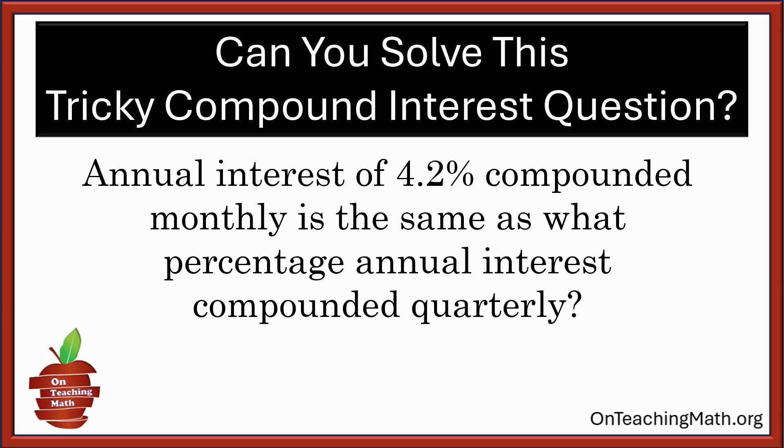Hello, everybody. Welcome. My name's Philip Brown. I've got a cool little problem right here. It's on compound interest, but it's not your straight old run-of-the-mill normal one. It says an annual interest rate of 4.2% compounded monthly is the same as what percentage annual interest compounded quarterly? Give it a shot. Put your answer in the comment. Let's see how you do.